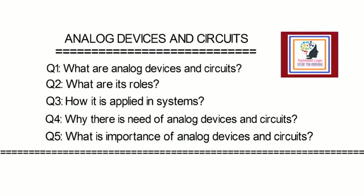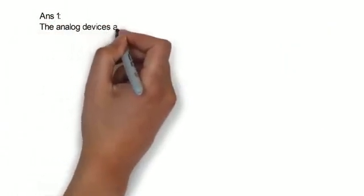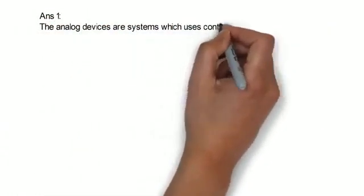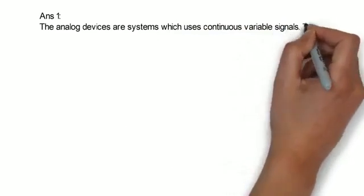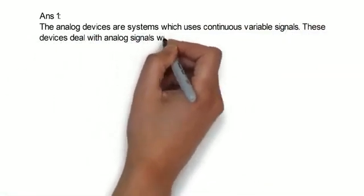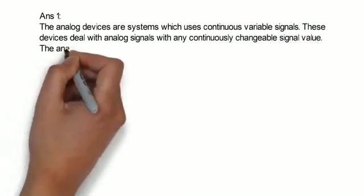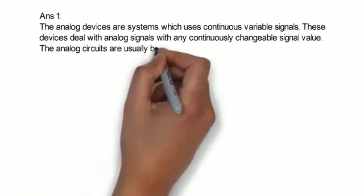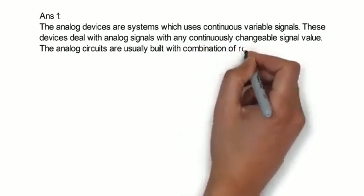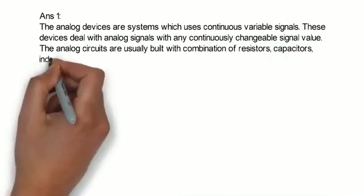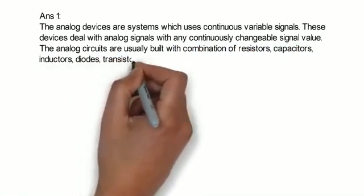The analog devices are systems which use continuous variable signals. These devices deal with analog signals with any continuously changeable signal value. The analog signals are usually built with combination of resistors, capacitors, inductors, diodes, transistors, and operational amplifiers.